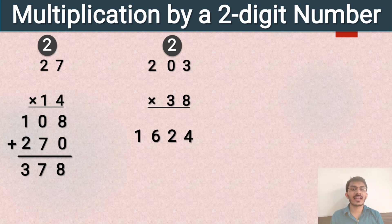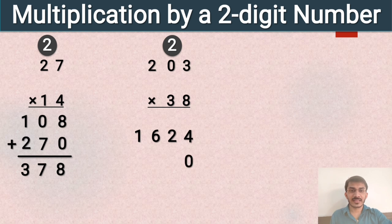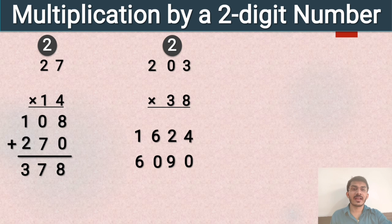Now 3 is at the tens place in the multiplier, so the place value of 3 is 30. First we write 0 below the ones place, then we do the multiplication. 3 threes are 9, 3 zeros are 0, and 3 twos are 6. Now we add both numbers: 1624 and 6090.